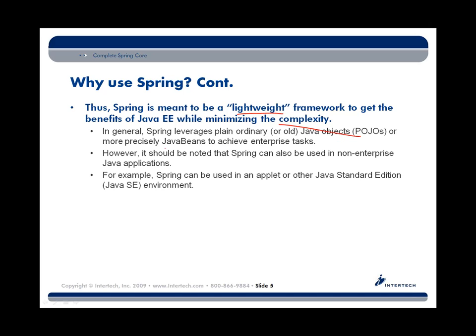More precisely, Spring uses Java Beans to try to build enterprise-type applications. However, it should be noted that just because the framework is there to help us build enterprise applications, we don't have to be working on an enterprise application. It could be a non-enterprise environment — for example, a Swing application running on clients that communicates with back-end enterprise systems. Spring could be used for that as well. Spring is an environment that helps us build all types, shapes, and sizes of Java applications, while trying to be less complex than the underlying Java Enterprise APIs it uses under the covers.